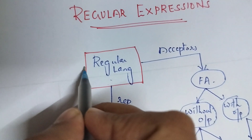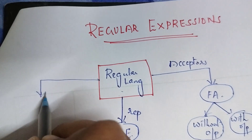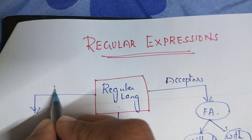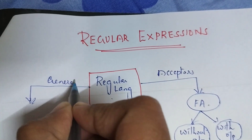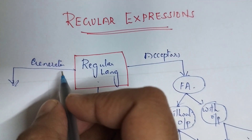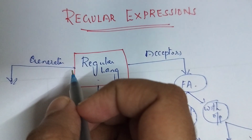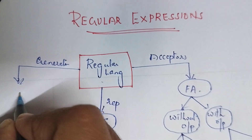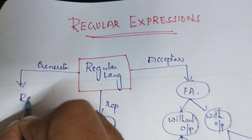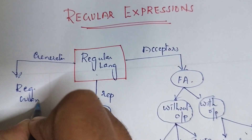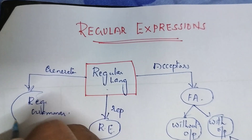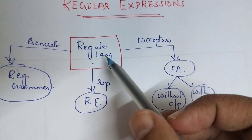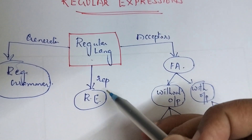One more thing you will see in the next unit, Unit 3, is that regular languages have a generator. All the strings in the language can be generated — or enumerated — by using generators. A generator is nothing but a regular grammar, and that will be covered in Unit 3. In this unit we are going to discuss how to represent a regular language using a regular expression.